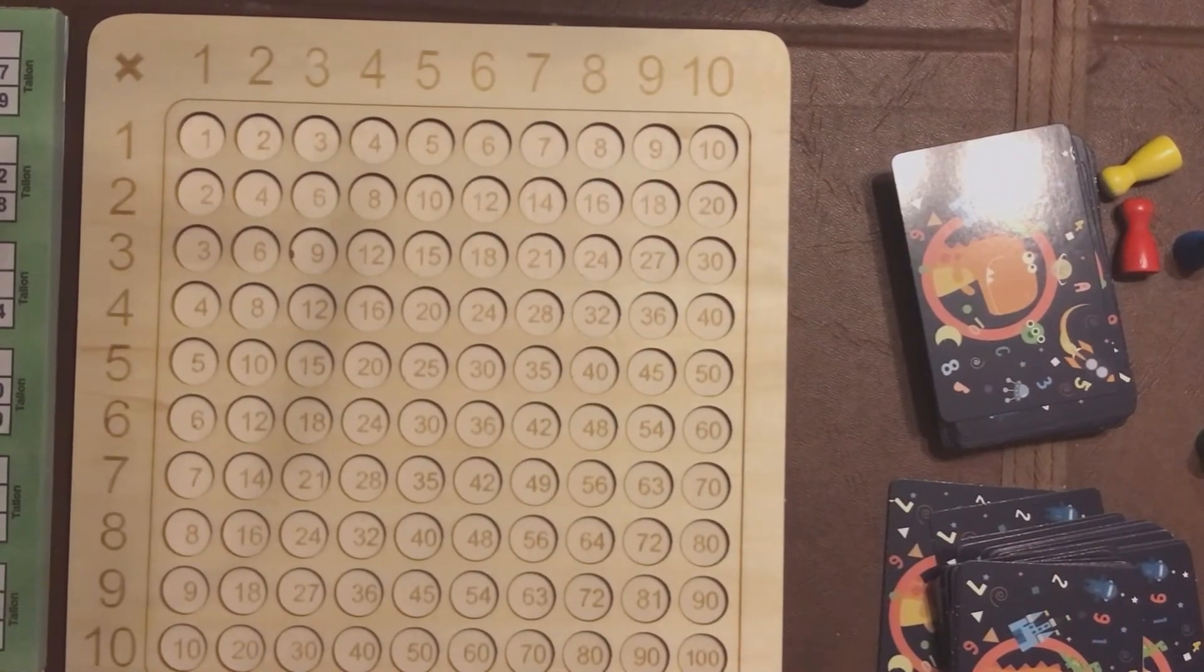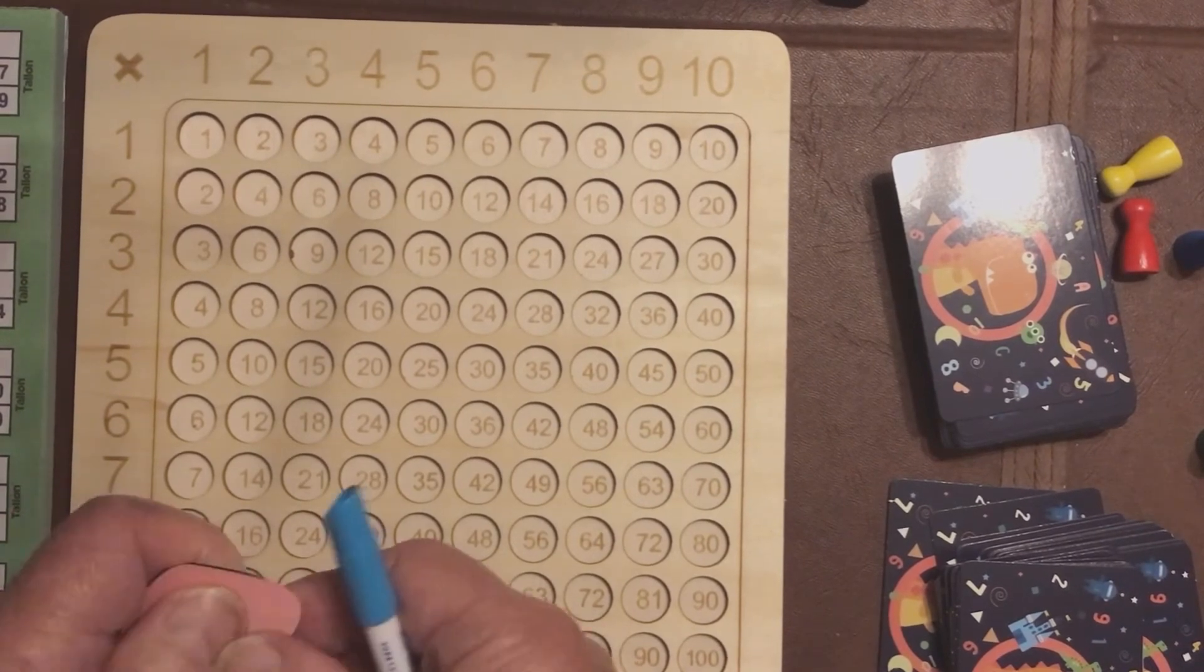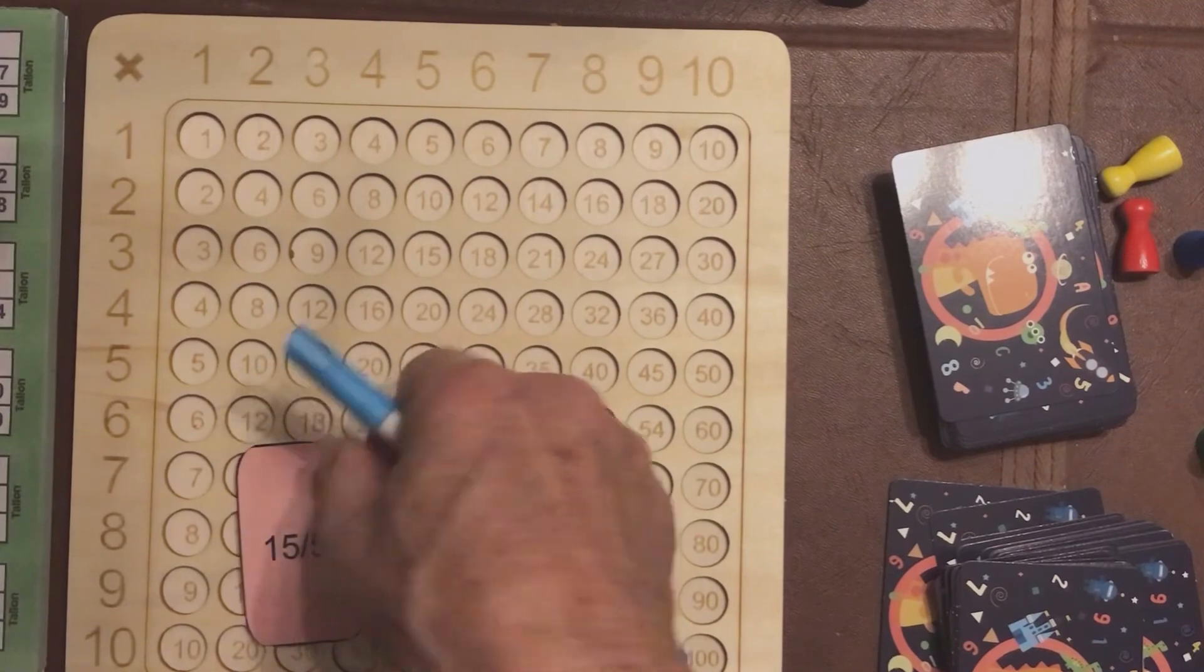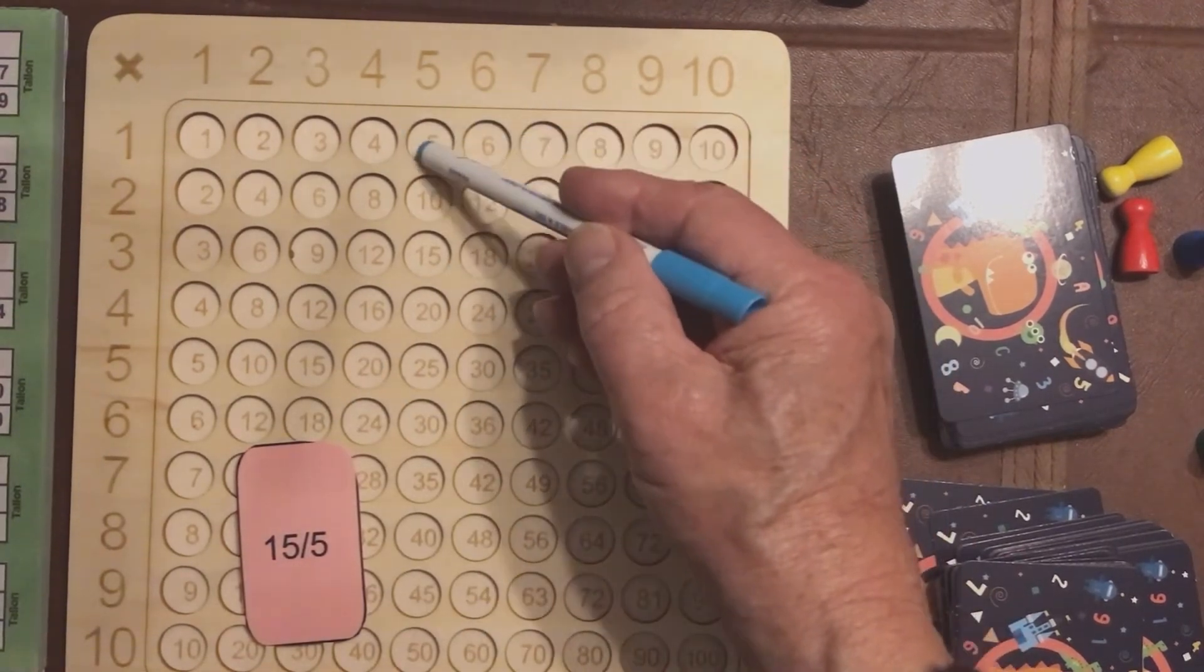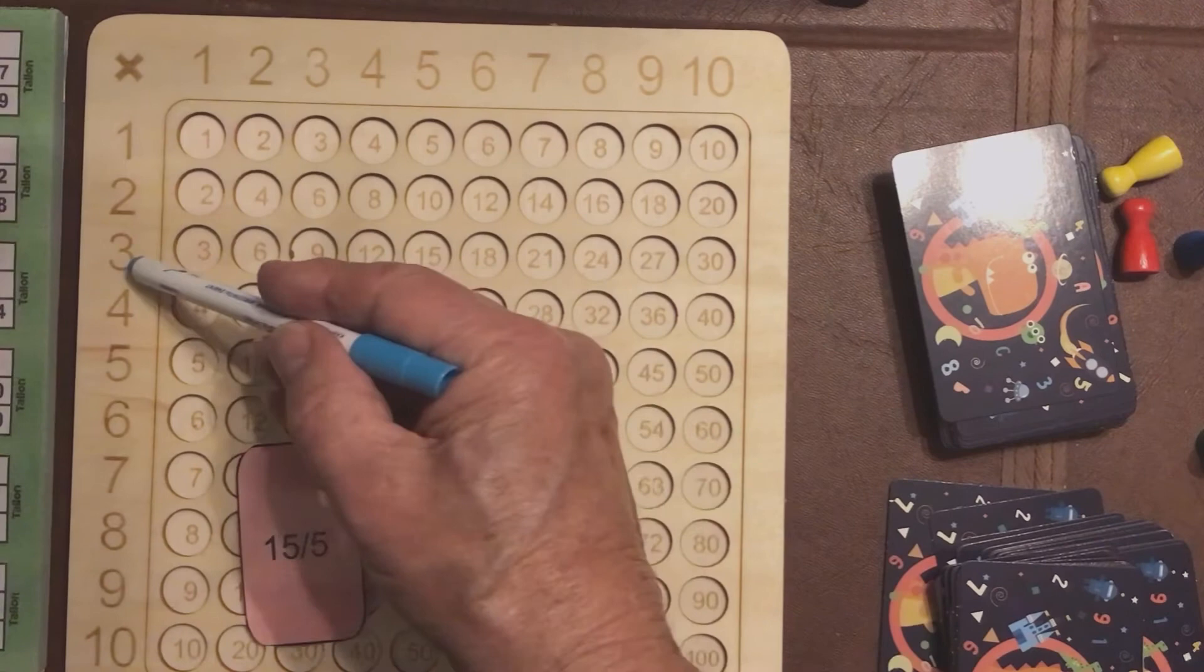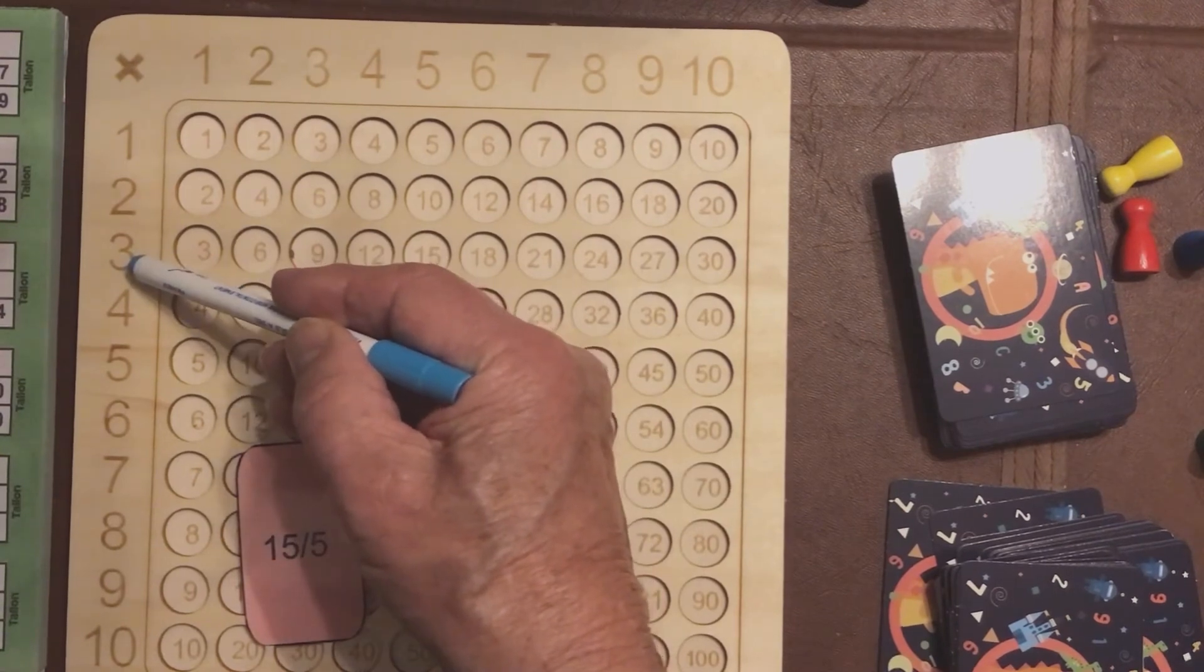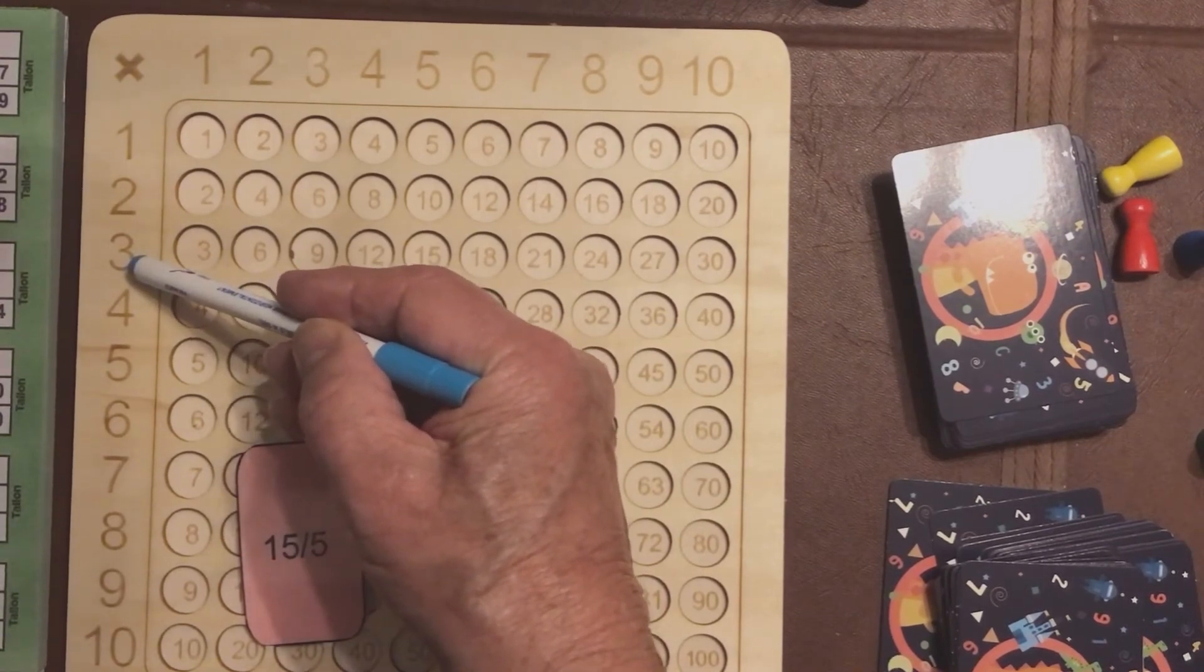One more to show you the actual theory of this. I'll pick it up. It's not 1. 15 divided by 5. So, you go to 5, go down to get to 15, go across, and the answer is 3. 15 divided by 5 is 3.